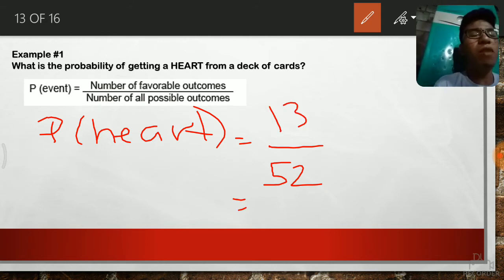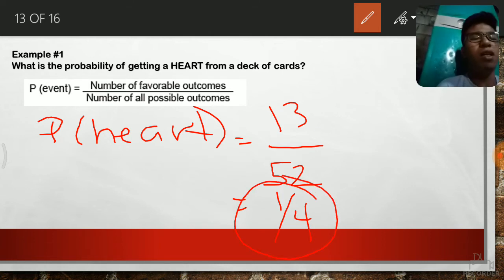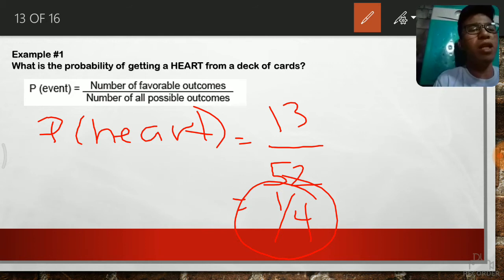There are 13 characters, meaning there are 13 hearts. The number of all favorable outcomes is equal to 13. Now, to simplify this fraction, 13 all over 52 is equal to 1 all over 4. This one is the answer. So I hope you understood the first example.